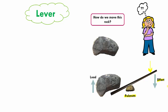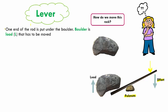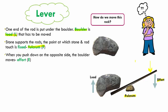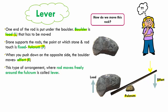This arrangement where there is load, fulcrum, and effort is called a lever. One end of the rod is put under the boulder — the boulder is the load, the heavy material we have to move. The stone supports the rod, and the point where the stone and rod touch is fixed — this is the fulcrum, represented by capital F. When you push down on the opposite side, that is the effort, capital E. This arrangement where the rod moves freely around the fulcrum is called a lever.